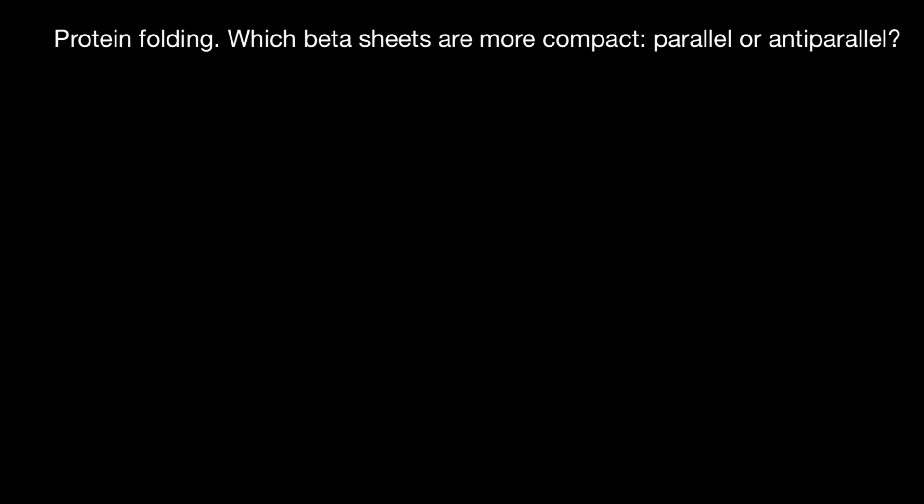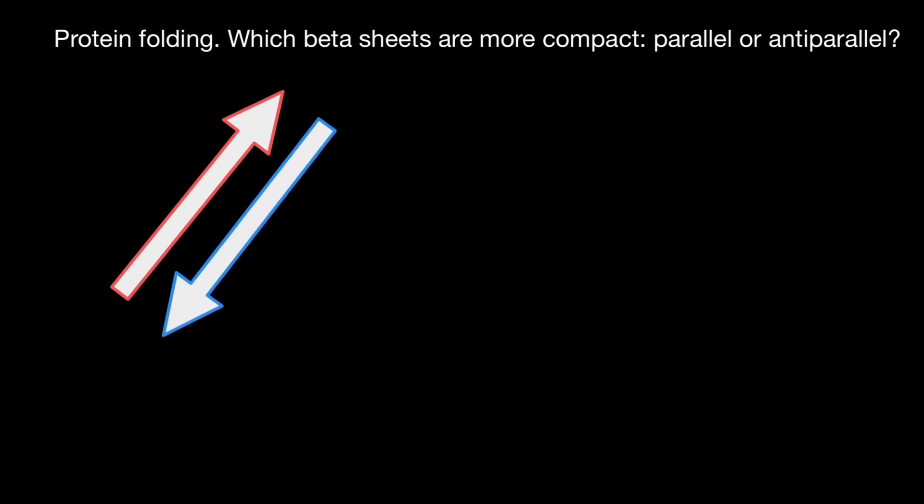Take a look, for example, at this arrangement. Here we have one beta sheet. Here's another one which goes in the different direction. This is antiparallel arrangement of beta sheets.